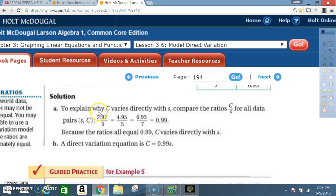Solution A. To explain why C varies directly with S, compare the ratio C to S. That's like saying Y over X. Y over X. For all data pairs. S and C. So, you get 2.97 divided by 3. That's equal to 4.95 divided by 5. That's equal to 6.93 divided by 7. And that's equal to 99. So, in other words, each one of these ratios is equal to 99. Because all the ratios equal 99, C varies directly with S.